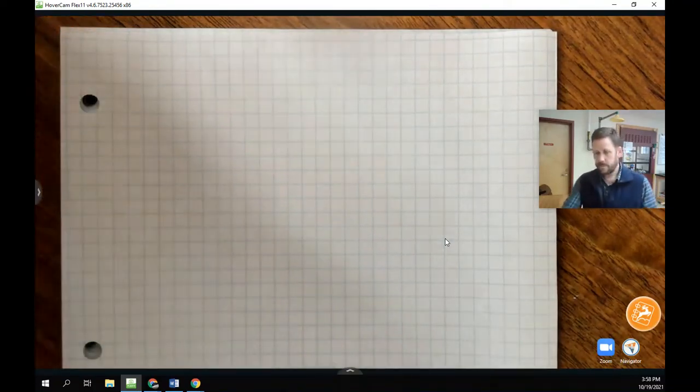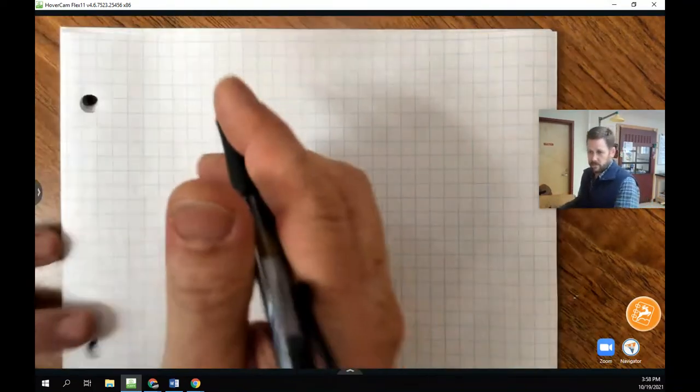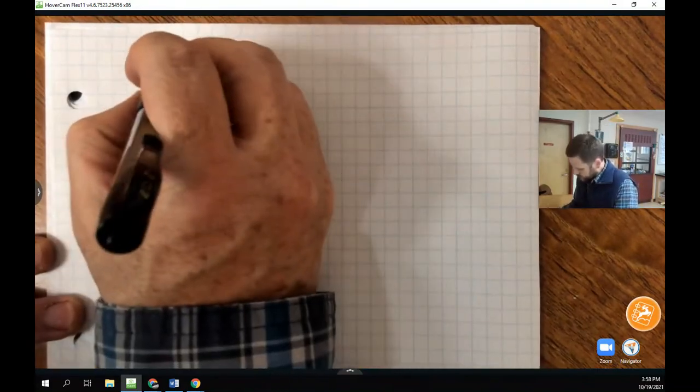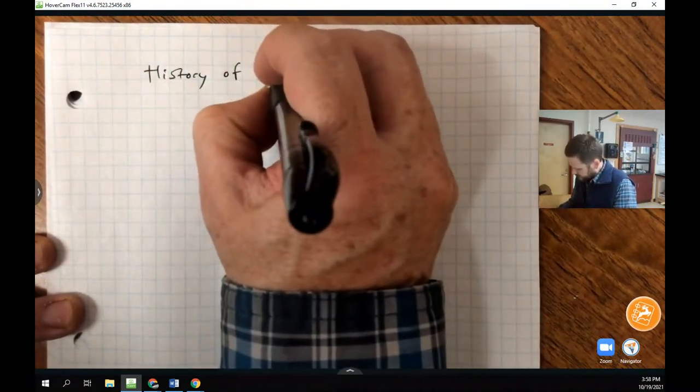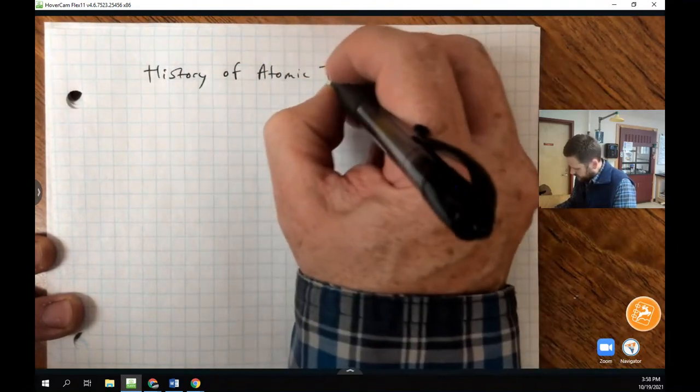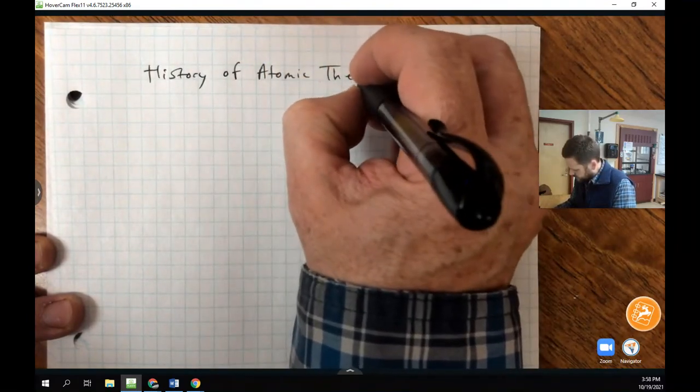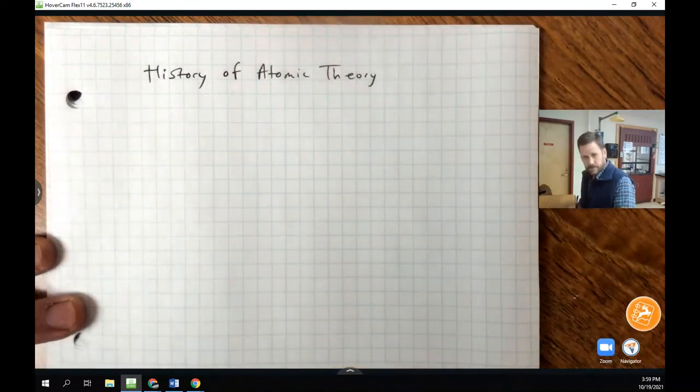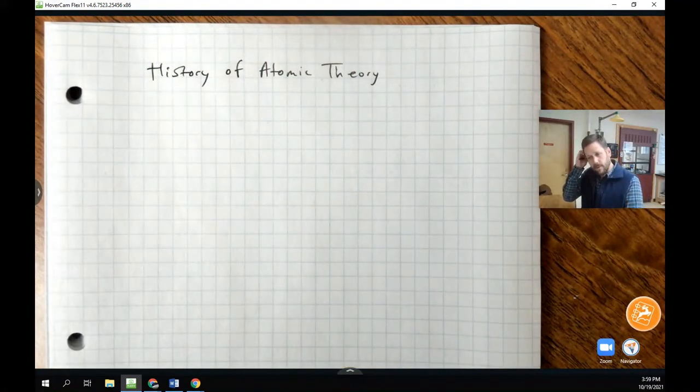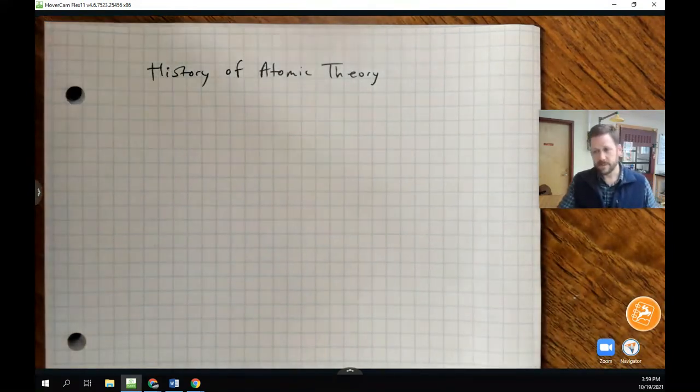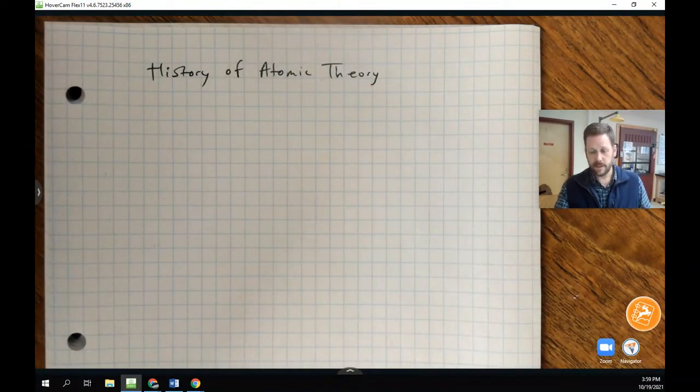Alright, so in this video we're going to talk about a history of models of the atom, a history of atomic theory. We're really talking about theories of the internal structure of atoms, mostly. But of course, we need to start somewhere, so we're going to begin with the very first idea of atoms, and that's going to take us back to ancient Greece.